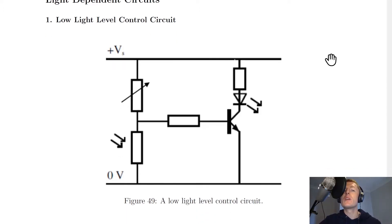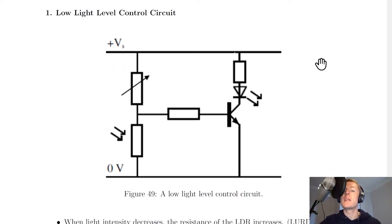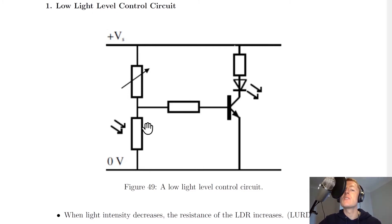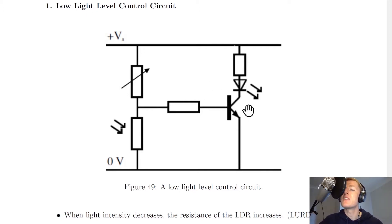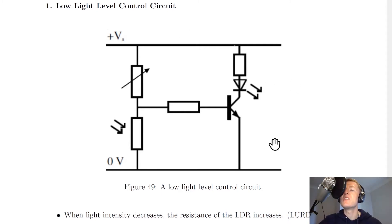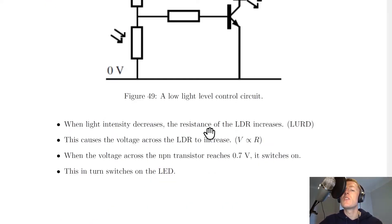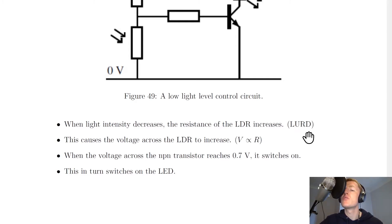Looking at the low light level control circuit first: here is the circuit with an LDR on the bottom — remember that is a resistor with two arrows pointing in towards it showing light going in — and we've got a variable resistor as the upper component, an NPN transistor, and an LED with a series resistor. For low light level, when light intensity decreases, the resistance of the LDR increases. That comes from the rule LURD: light up, resistance down — but the opposite is also true, so light down, resistance up.